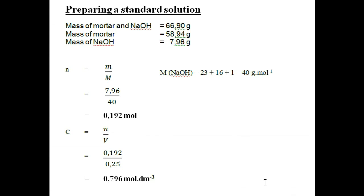The mass of the mortar and the NaOH was 66.90 grams and the mass of the mortar on its own was 58.94 grams, so the mass of the NaOH is 7.96 grams. Now we can work out the number of moles of NaOH. Number of moles equals mass divided by molar mass. The actual mass is 7.96 grams and your molar mass is 40. The 40 is given by sodium 23, oxygen 16, and hydrogen 1. 7.96 divided by 40 gives you 0.192 moles.